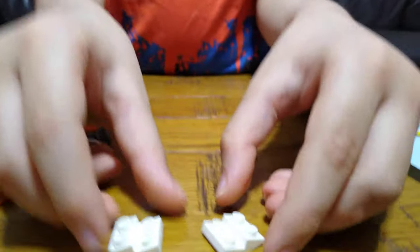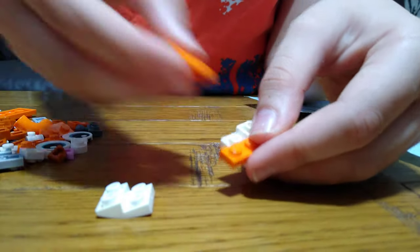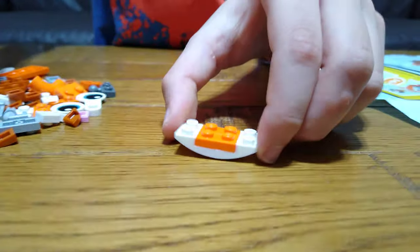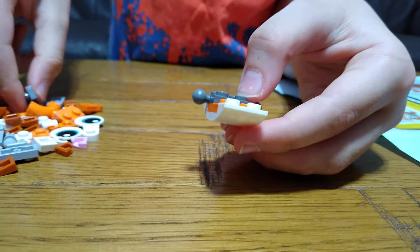First we get two of these, place two of these on each side, like that, and connect it to that. Then we get four of these, place them on each side for the hands and the legs.